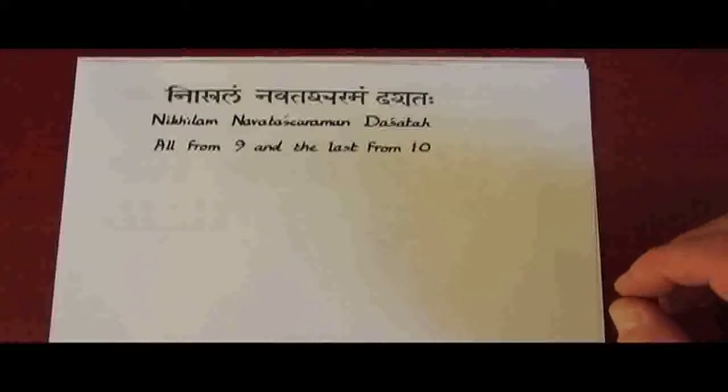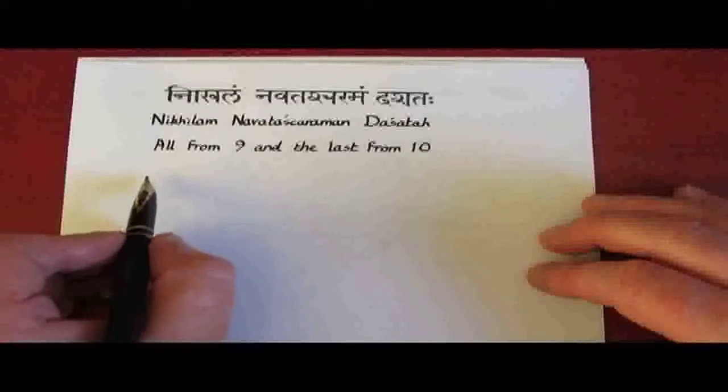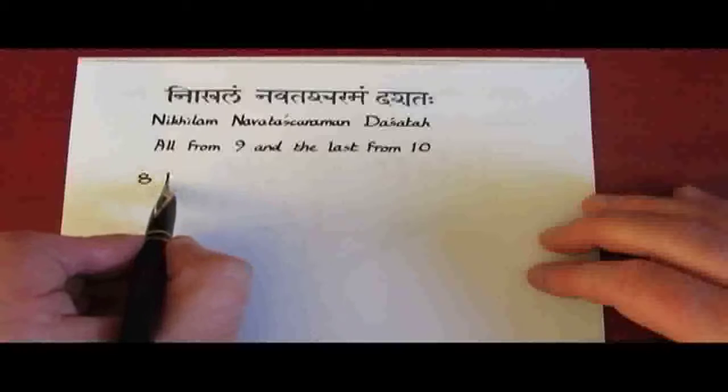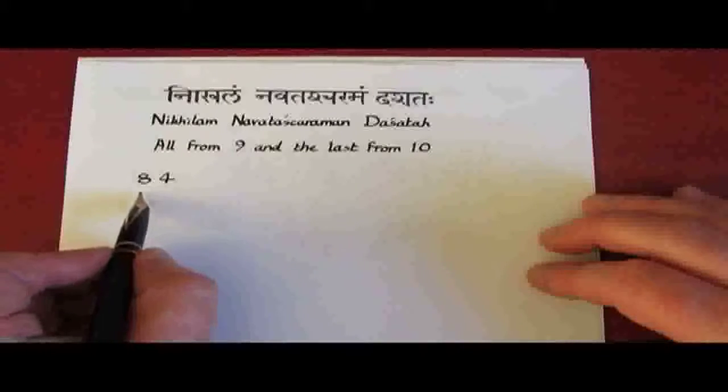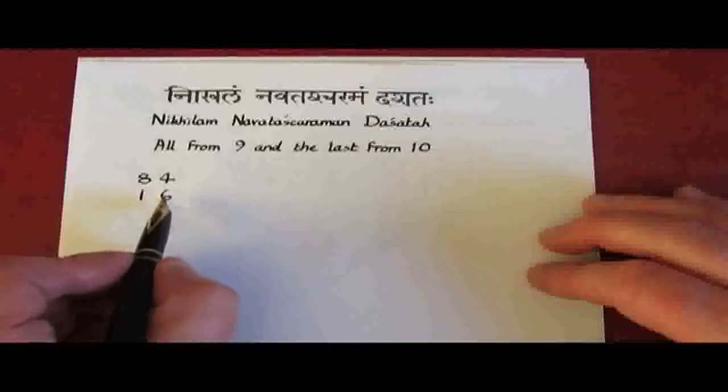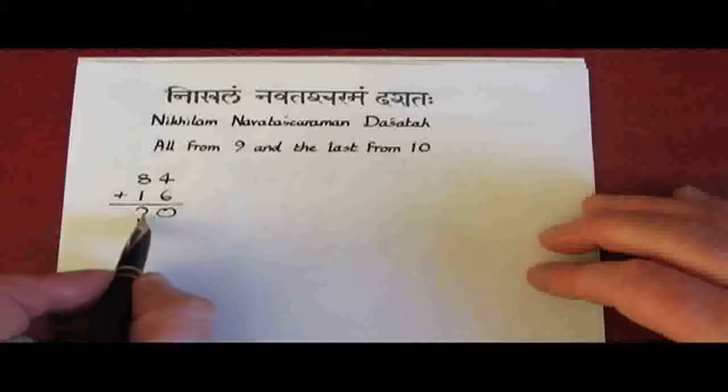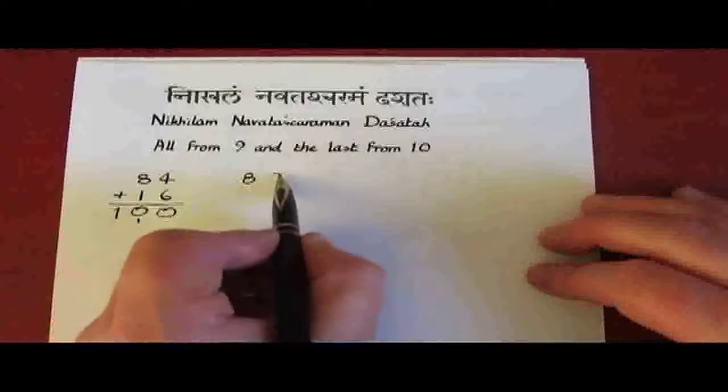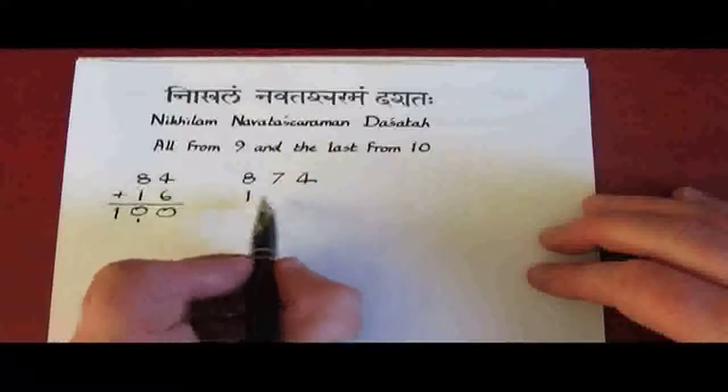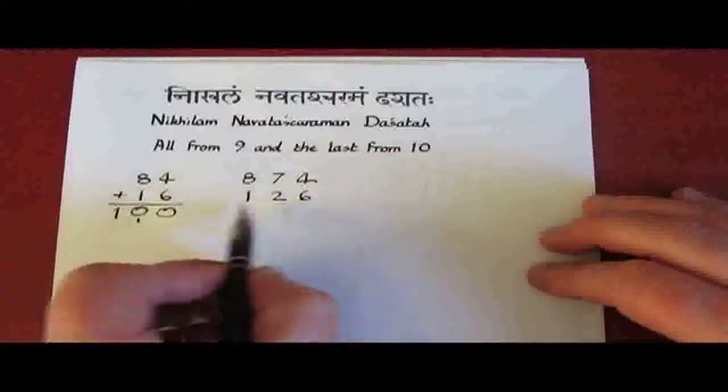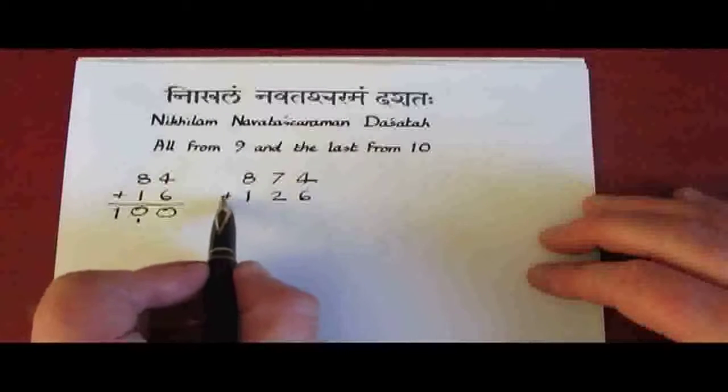And the reason this method of multiplication is named after that is because this rule gives us the complement or the deficiency in every case. So if we have for example 84, and we take all the digits away from 9 but the last one from 10, well there's only one digit here to take away from 9. So 8 from 9 is 1, and the last from 10 is 6. Well that gives the deficiency from 100, and we can easily check this just by adding. Again if you take a larger number like 874, and apply the rule all from 9 and the last from 10, here we get 1, 2, and the last from 10 is 6. So 126 is the complement or the deficiency of 874 from 1000.